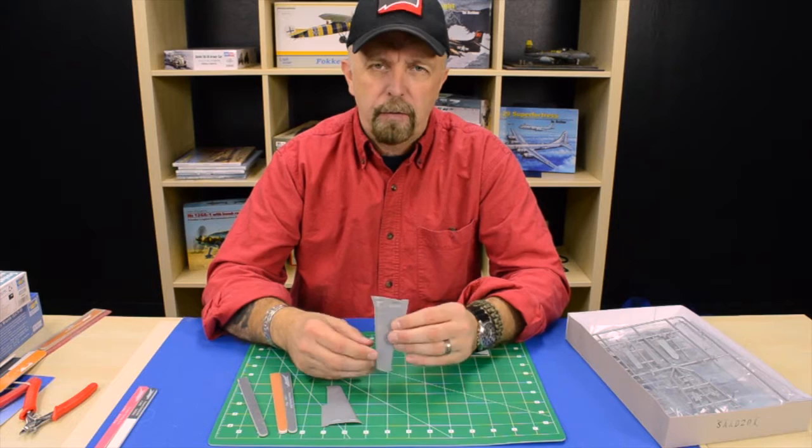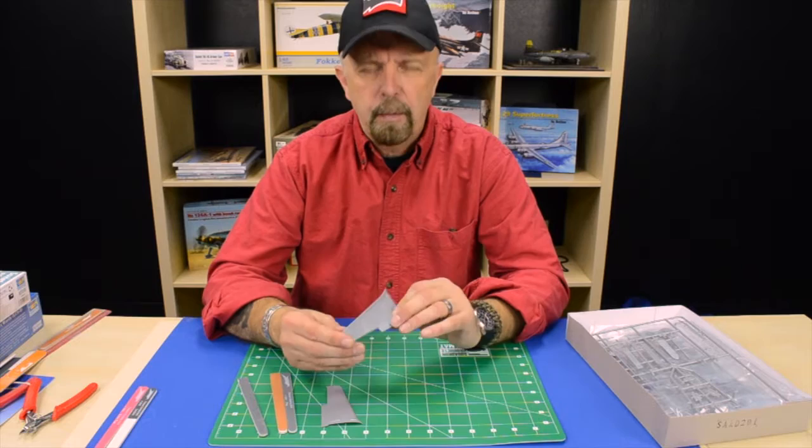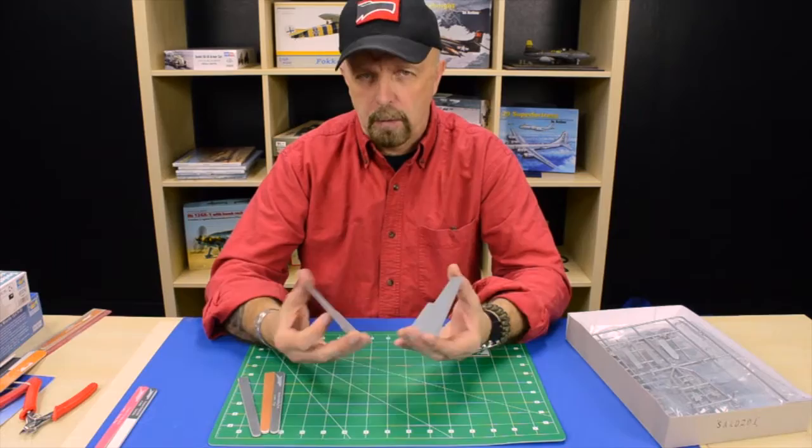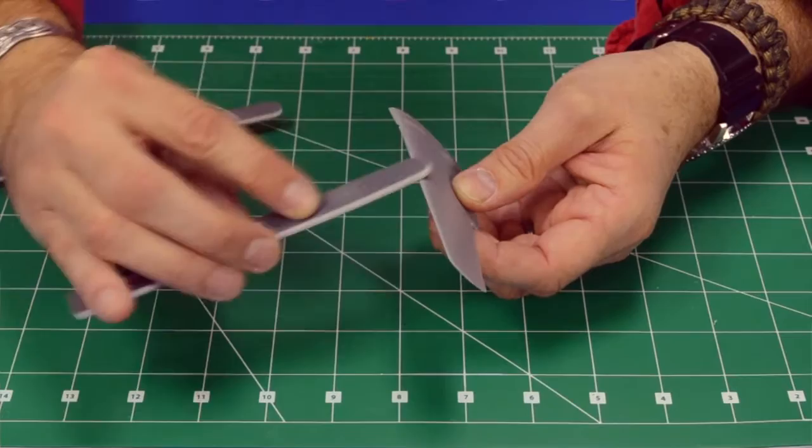Once you remove the part from the sprue, the first thing to check for is flash or ejector pin marks. Sometimes they can be very prominent and need to be removed because they will interfere with any part you have to attach to it, or in this case when you have to put two wing halves together or even fuselage halves.